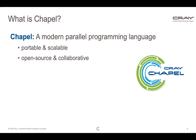If you're not familiar with Chapel, it's a modern parallel programming language. It's portable and scalable — it can run on laptops, commodity clusters, the cloud, or supercomputers. It's an open source and collaborative project, hosted on GitHub and distributed under the Apache 2.0 license.